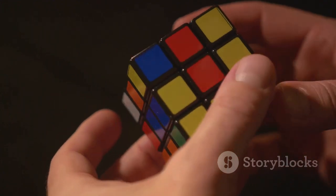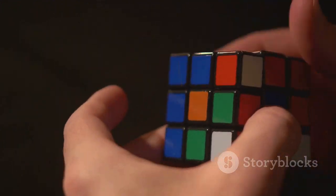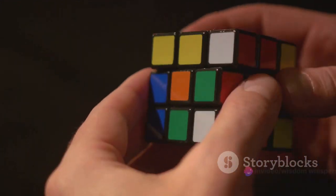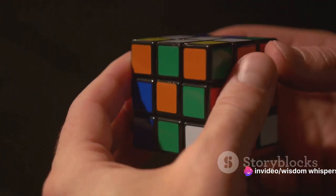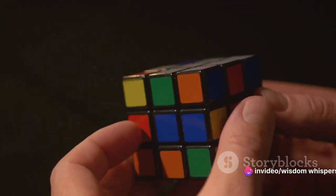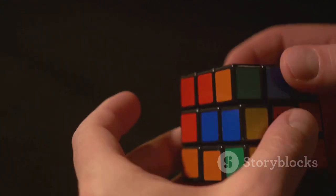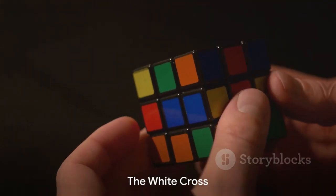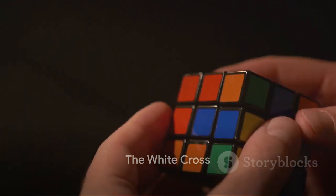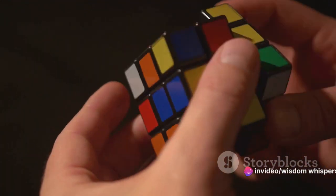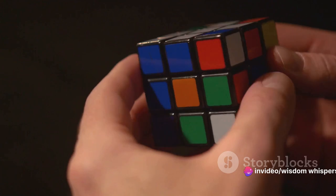Understanding the cube is like understanding a complex puzzle. Each piece, each color, each move you make has a purpose. It's about more than just twisting and turning. It's about strategy, thinking ahead, patience and precision. Now that you have a basic understanding of the cube, it's time to dive into the solving process. The first step to solving the cube is to form a white cross. This is your foundation, your starting point. It's where the magic begins.